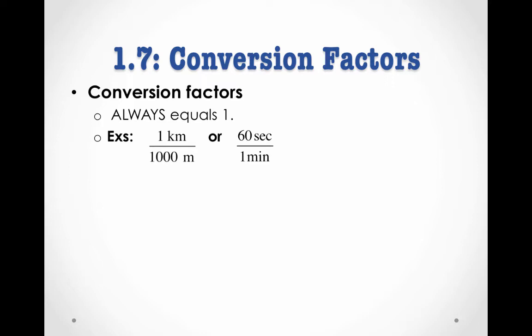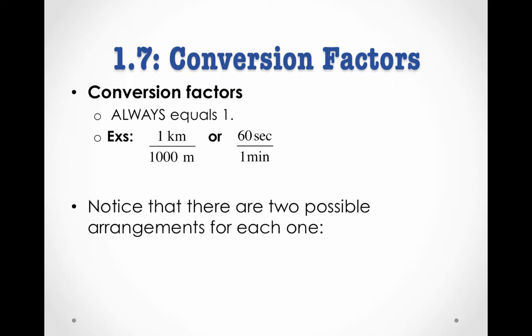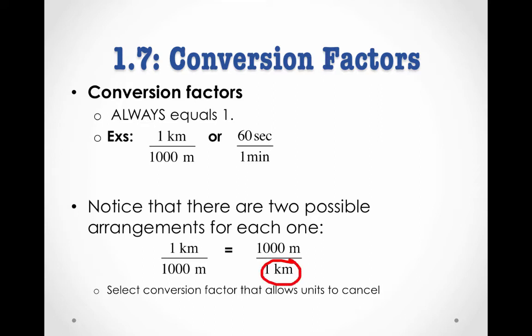Because they're equal to 1, they won't change the numeric quantity that we're working with. They will change the numeric value, however. So for instance, if we're converting from 1 kilogram to meters, we might end up with 1,000 meters rather than 1 kilogram. But it's still the same amount of stuff. Just a different unit. So notice there are two possible arrangements for conversion factors. We can have 1 kilometer over 1,000 meters. Or we can have 1,000 meters over 1 kilometer. So how do you know which conversion factor to choose? We're going to choose the one that allows our units to cancel. So essentially, we're going to choose the one where the units on the given are the same as the units on the bottom of the fraction or in the denominator of the fraction. This will make more sense when we put it into action. So let's look at an example.